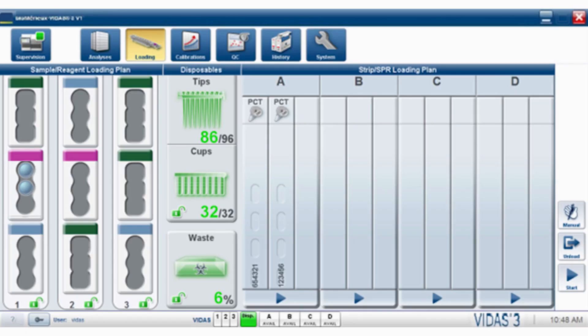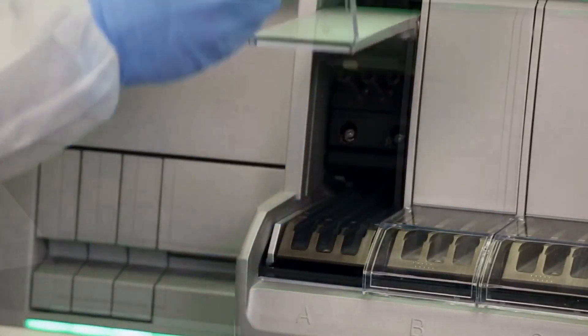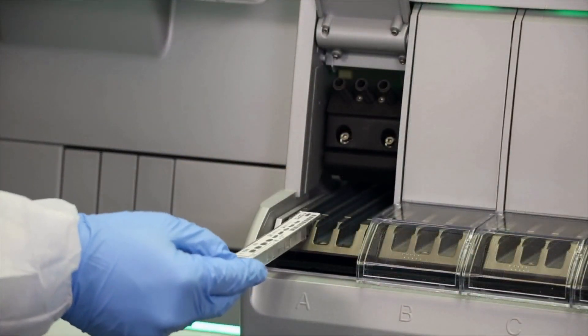Once in place, the loading screen reflects the reagents' locations based on their barcodes. Open the section door that the strips and spurs will be loaded into.